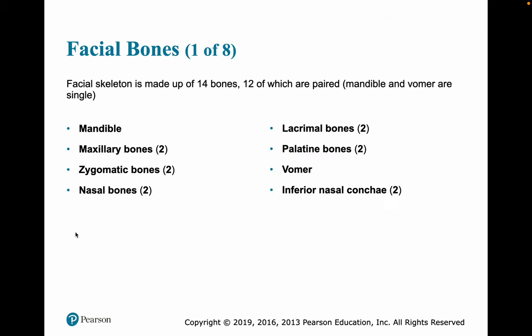The face is made up of 14 bones, twelve of which are pairs — so the mandible and the vomer are unpaired. We have one mandible, two maxillary, two zygomatic, two nasal, two lacrimal, two palatine, one vomer, and two inferior nasal conchae.